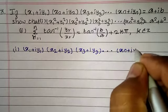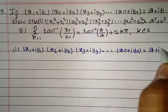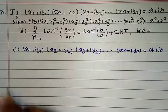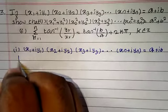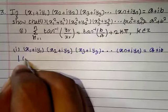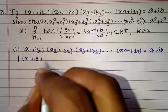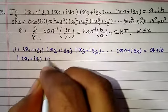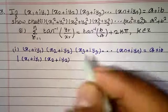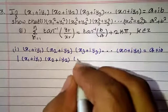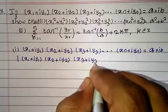We have x1 plus iy1 into x2 plus iy2 ... xn plus iyn equal to a plus ib. We take the modulus of both sides. Using the property: modulus of z1 into z2 equals modulus of z1 into modulus of z2.